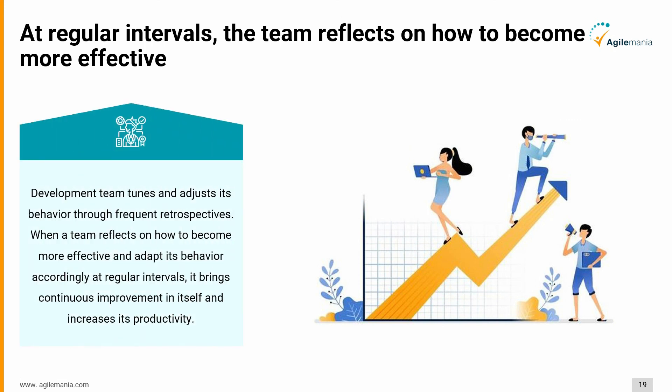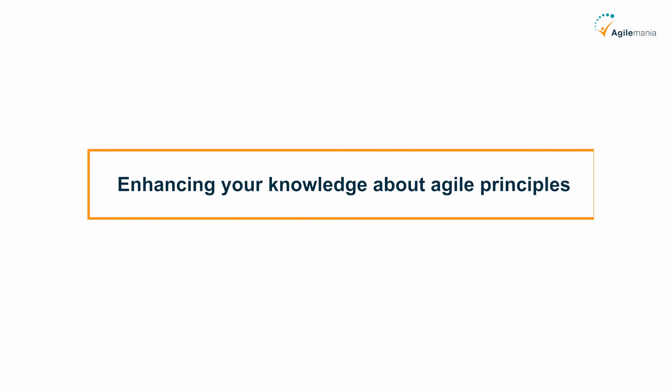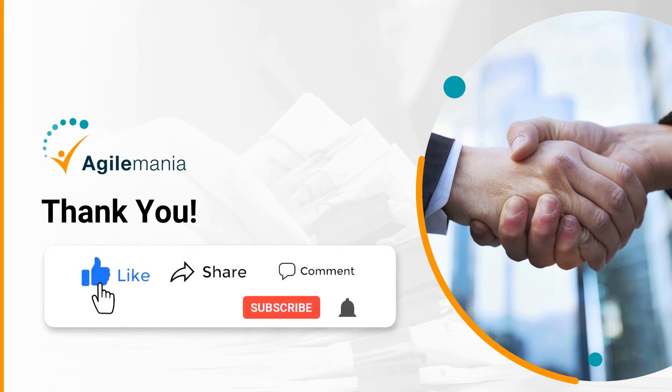The twelfth principle in detail: at regular intervals, the team reflects on how to become more effective. The development team tunes and adjusts its behavior through frequent retrospectives. When a team reflects and adapts its behavior accordingly at regular intervals, it brings continuous improvement and increases productivity. So these were the 12 principles of agile — we hope this video helped enhance your knowledge about agile principles.